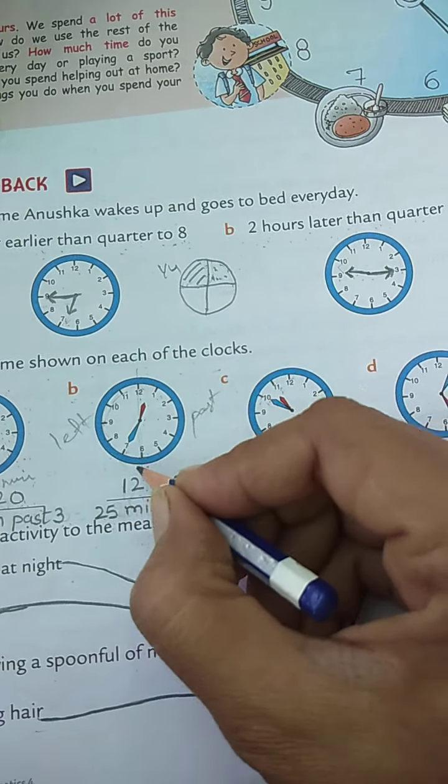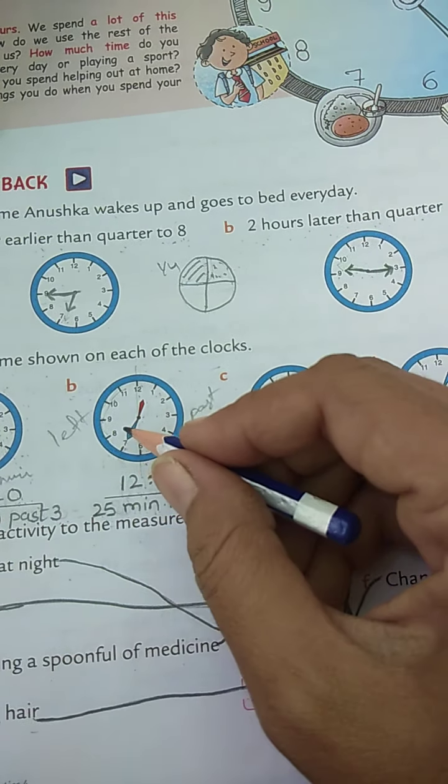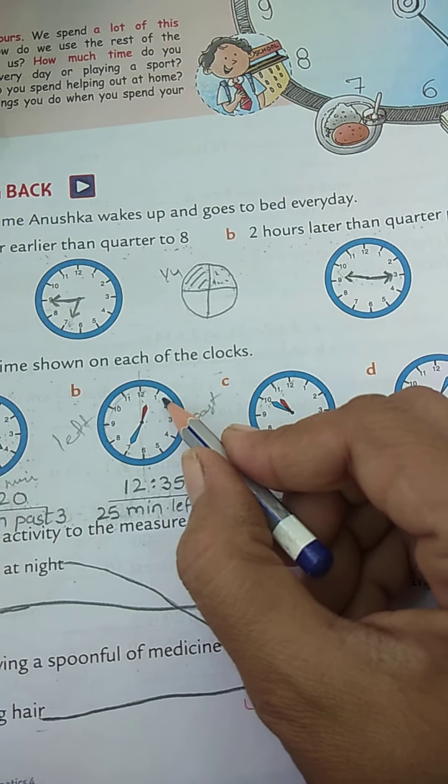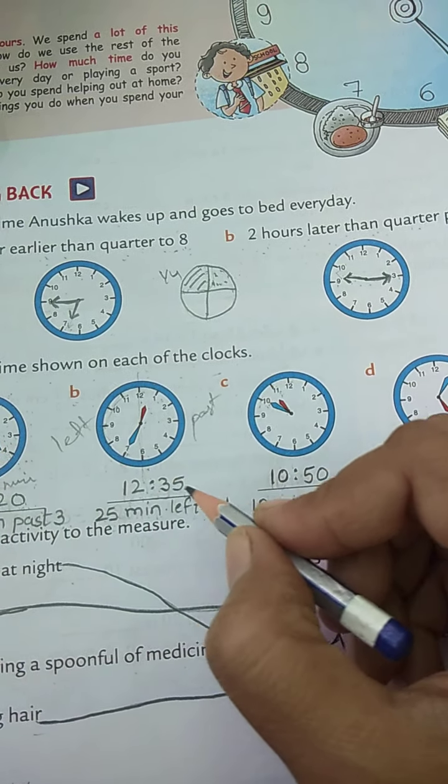So it is on seven, so we have to use like this: 25 minutes left to next, what is that? One o'clock. One o'clock has not happened, 25 minutes are still remaining for one o'clock.